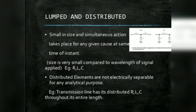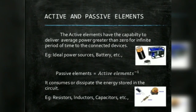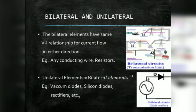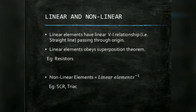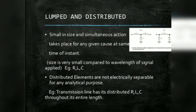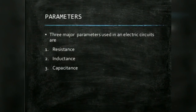Lumped components are small in size and action takes place simultaneously at the same instant. Their size is very small compared to the wavelength of the signal applied — examples are resistors, inductors, and capacitors. Distributed elements are not electrically separable for analytical purposes, like a transmission line which has distributed RLC throughout its entire length. The three major parameters used in electrical circuits are resistance, inductance, and capacitance.